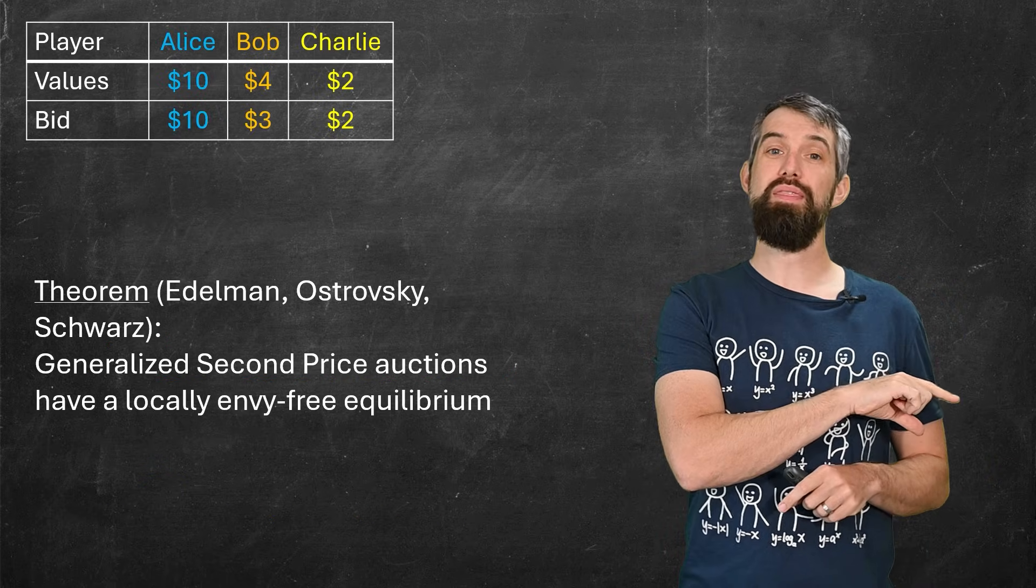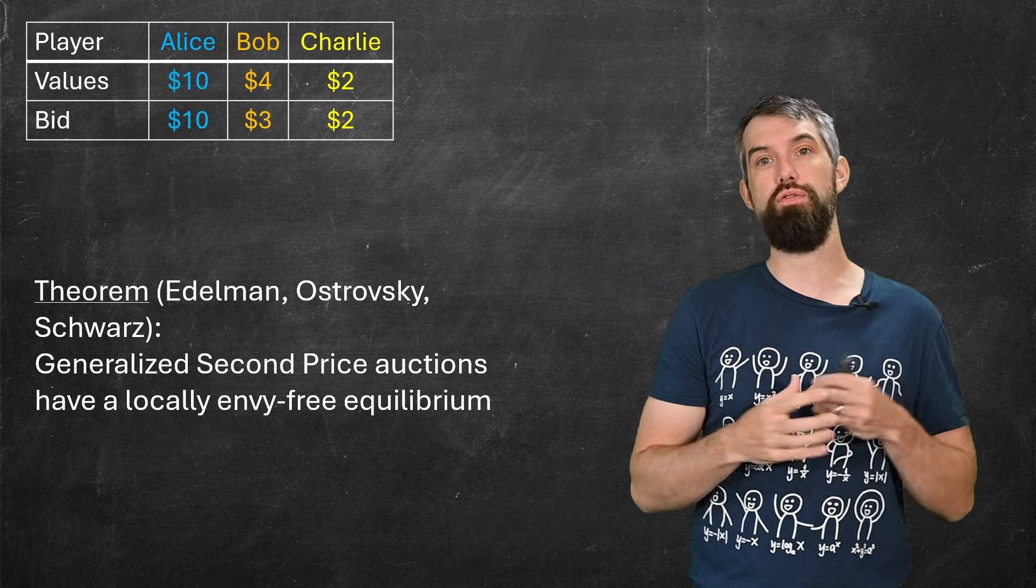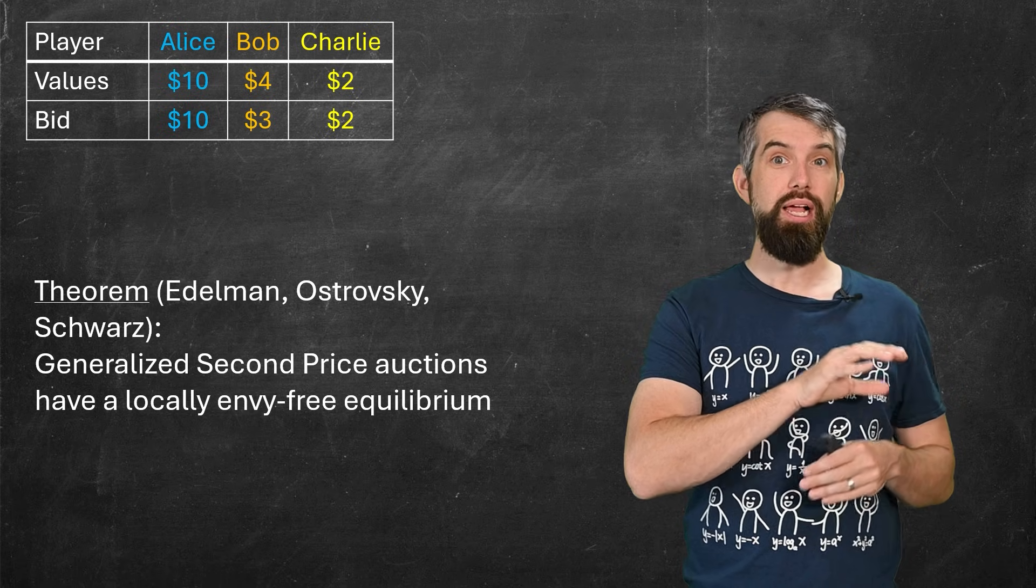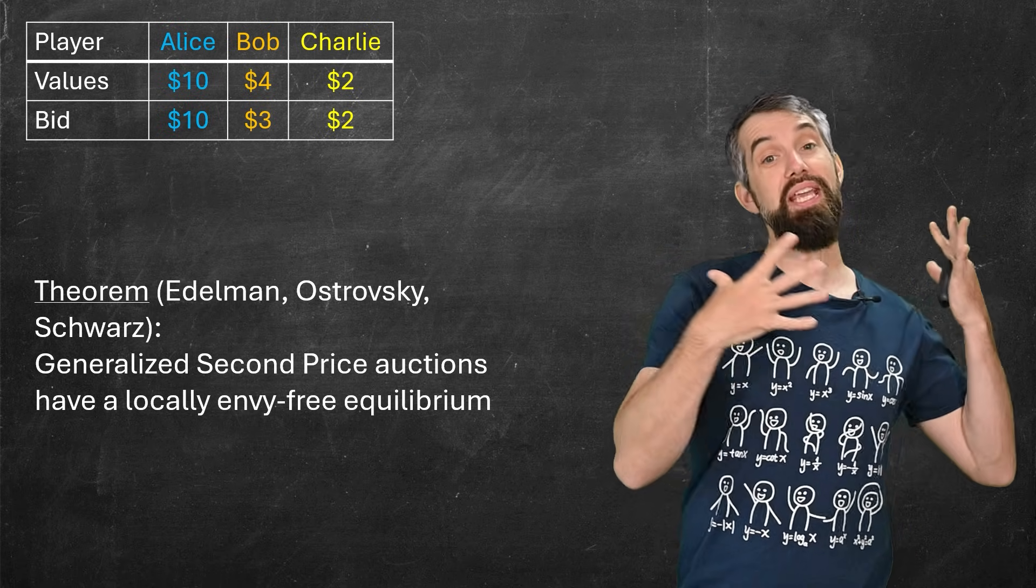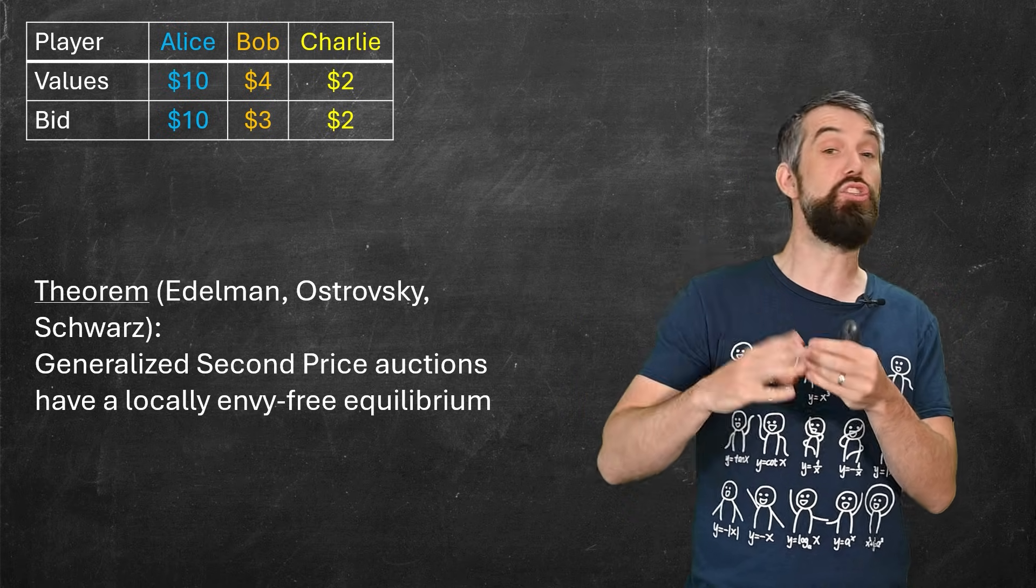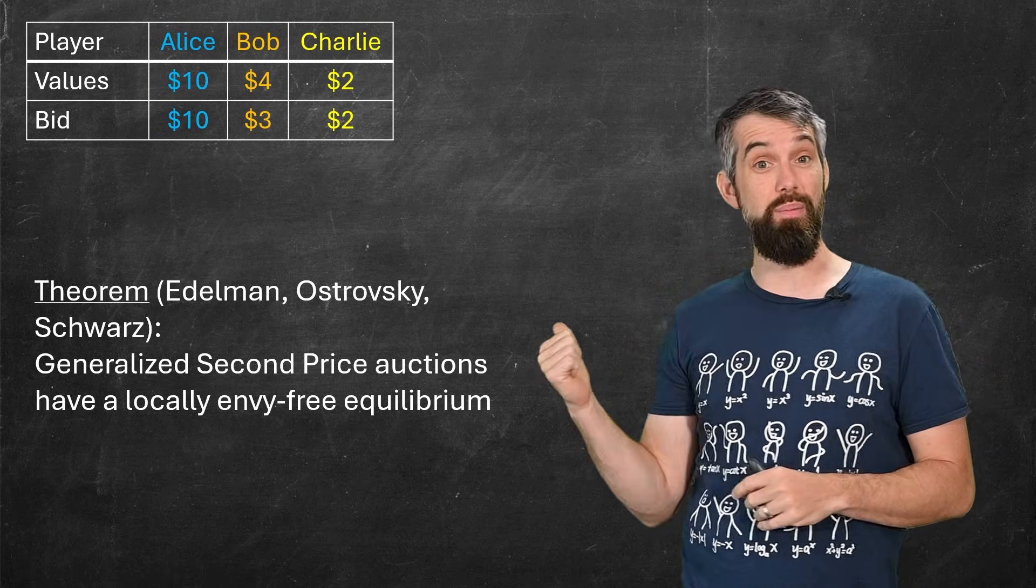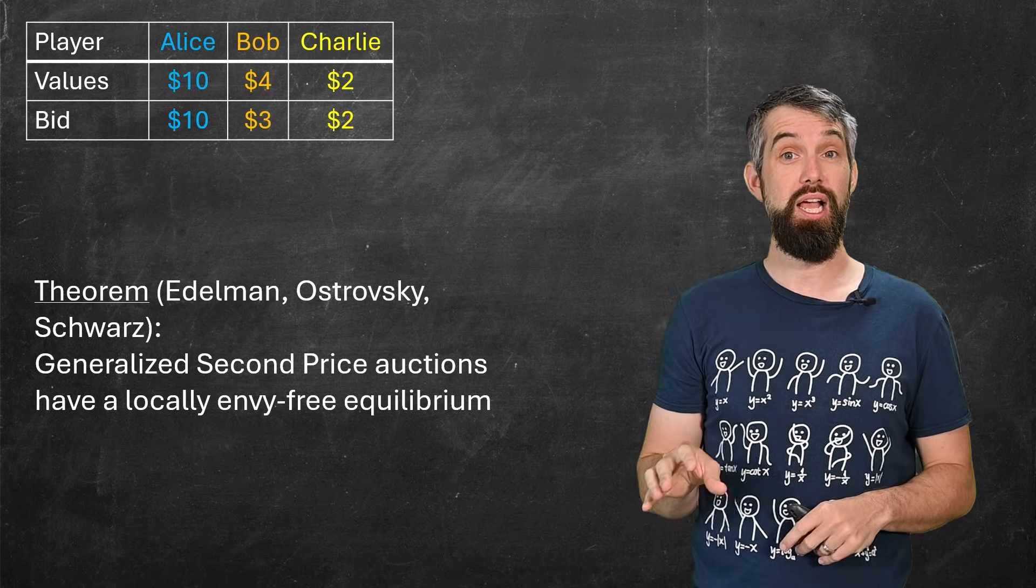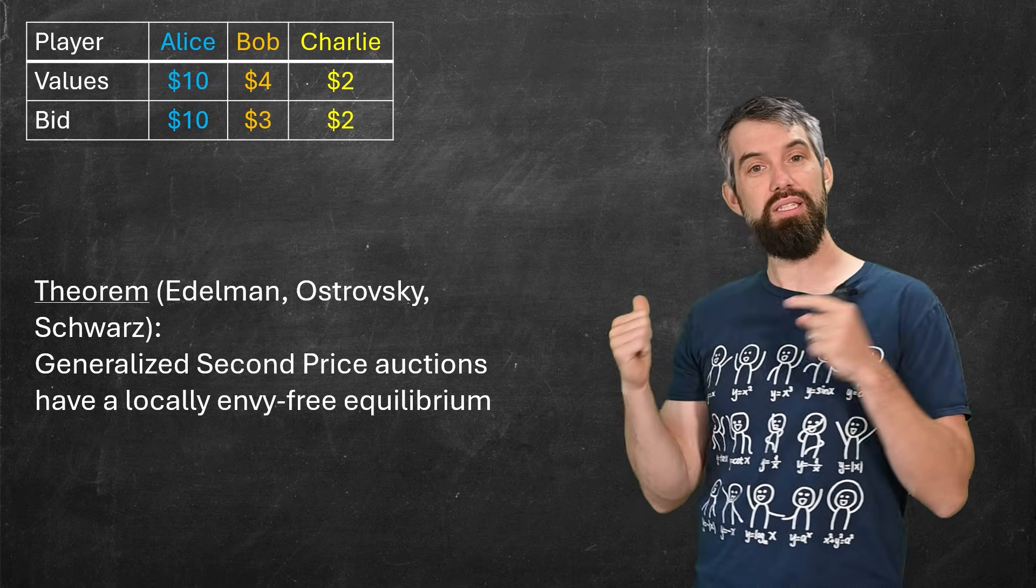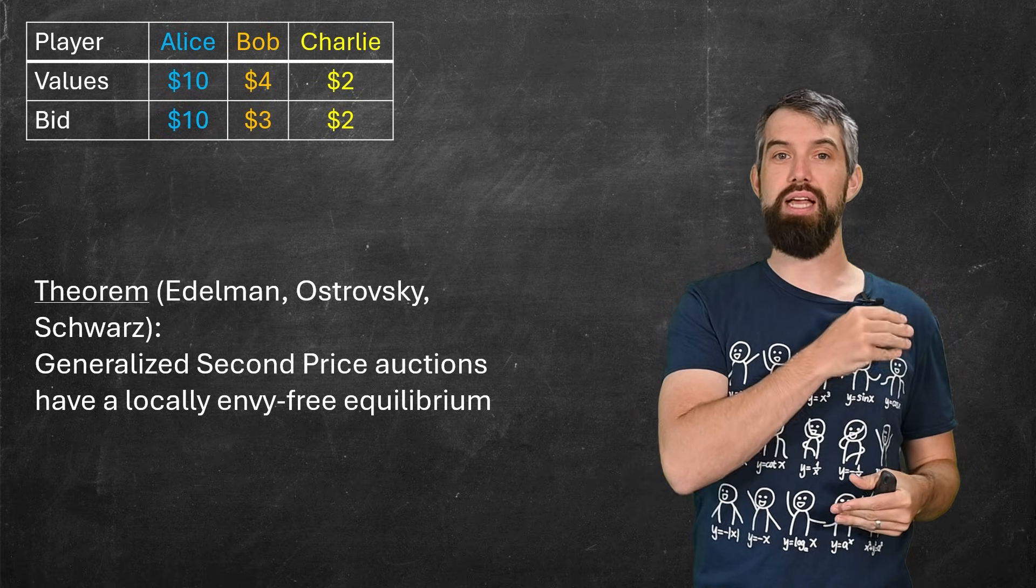Now, you will know that it wasn't truthful. I mean, in the numbers that I have here, Bob shaded his bid and bid less than his true valuation. But the stability is the part that we really like. In particular, this business of being what's called a locally envy-free equilibrium. Which means nobody is envious of the person above. They don't want to switch with the person above and pay the price of the person above them. And it's a theorem that for generalized second price auctions, there always is one of these locally envy-free equilibriums. And the existence of this envy-free equilibrium is what creates the stability of a generalized second price auction.